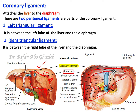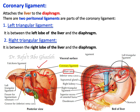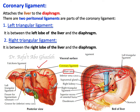The coronary ligament has two peritoneal extensions — one on the left and one on the right — which are considered part of the coronary ligament. They have a triangular shape, which is why they are called the triangular ligaments: this is the left triangular ligament and this is the right triangular ligament. The right triangular ligament connects the liver to the right side of the diaphragm, and the left triangular ligament connects the left lobe of the liver to the diaphragm.